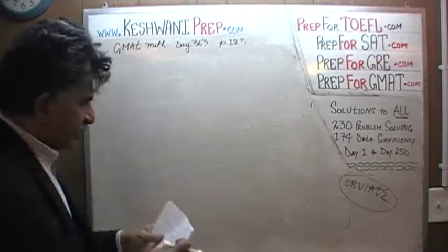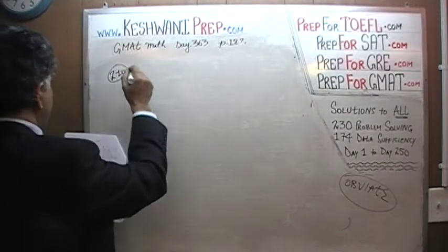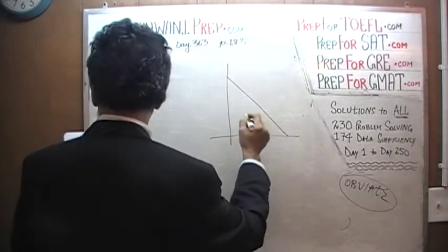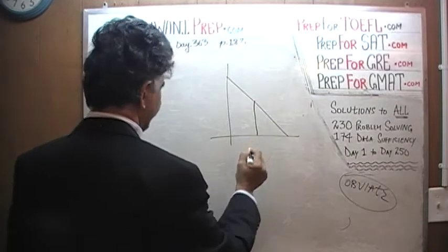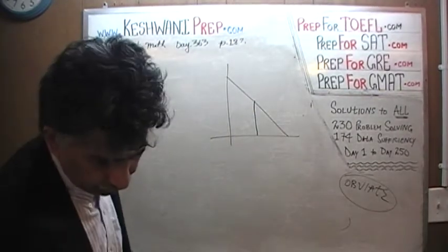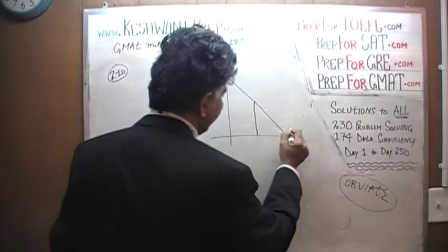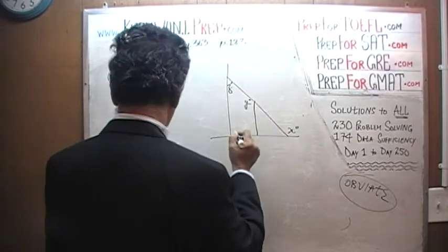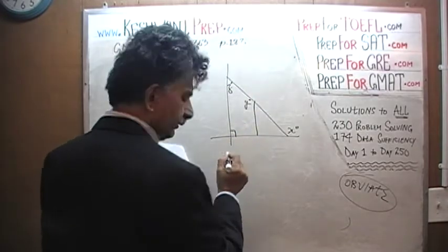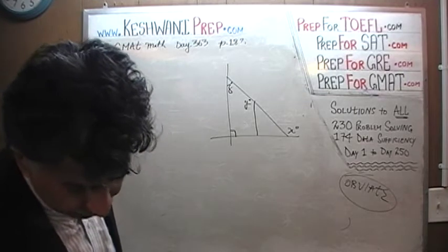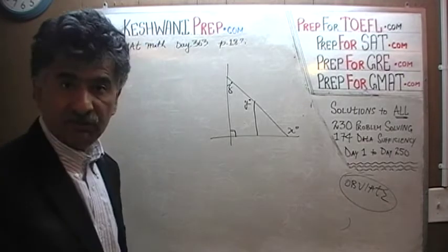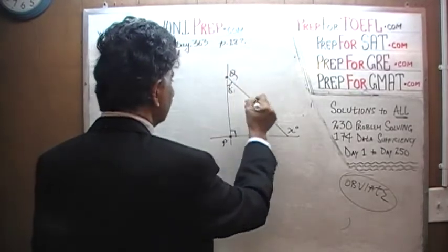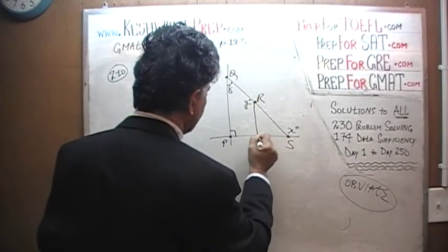Number 210 is a geometry problem. We are given a picture with angles x, y, and z. So outside is x, then we have y, and then we have z. We are told there is a right angle. They do not give these vertices names, but we are going to give them names so it is easier for us. Let's call them P, Q, R, S, and T.